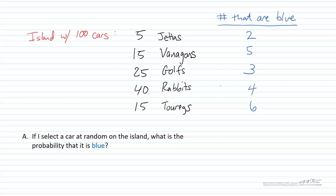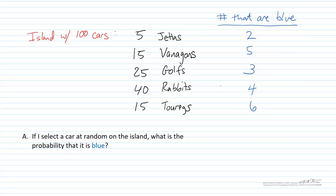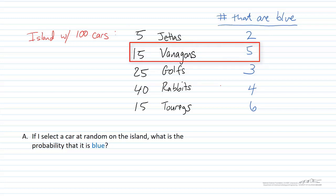So let's go ahead and work through an example. We live on an island where there are 100 cars — a small Pacific island. There are 100 cars and they're all Volkswagens: 5 Jettas, 15 Vanigans, 25 Golfs, 40 Rabbits, and 15 Toureggs, and they're all different colors. We know that 2 Jettas are blue, 5 Vanigans are blue, 3 Golfs are blue, 4 Rabbits are blue, and 6 Toureggs are blue. These are not independent events — the type of car and the color are not independent, because the probability that a Jetta would be blue is 2/5 (40%), while the probability that a Vanigan is blue is about 1/3, and so on.